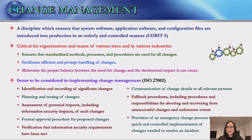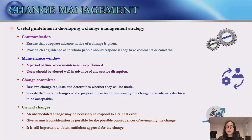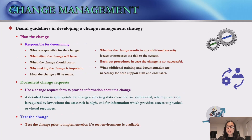ISO 27000 series suggests several items to be considered in implementing change management, listed on this slide. The following guidelines are also useful in developing a change management strategy. They include dealing with communication, maintenance windows, change committee, and critical changes. They also cover planning the change, documenting change requests, and testing the change.